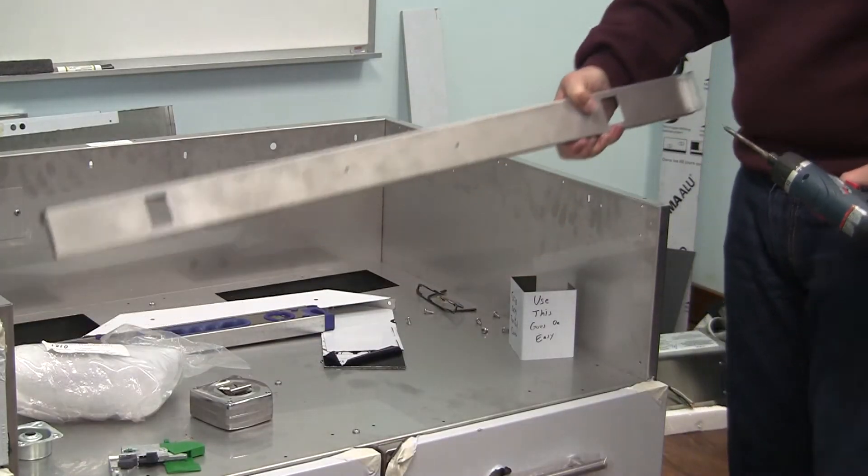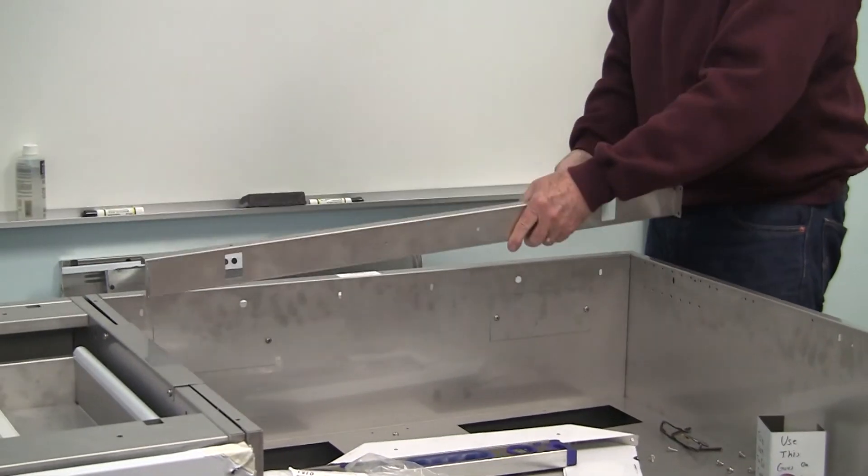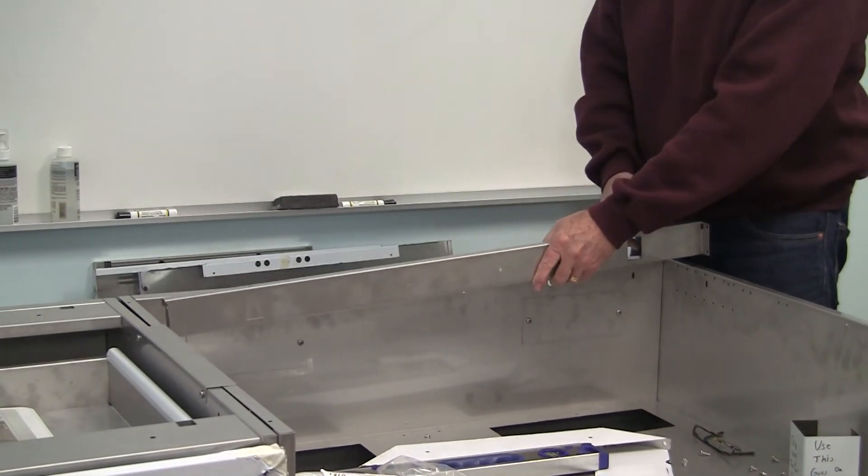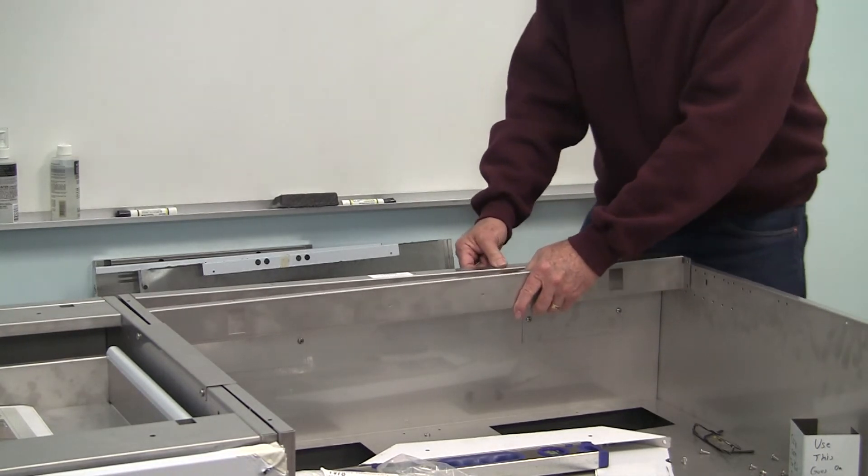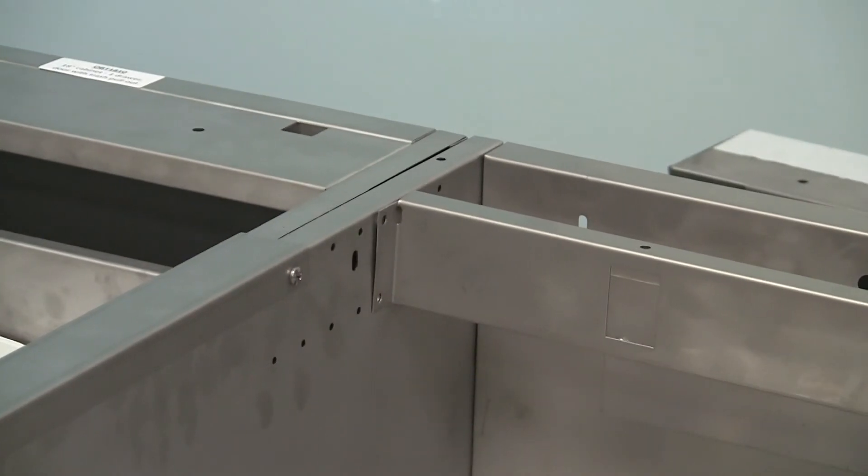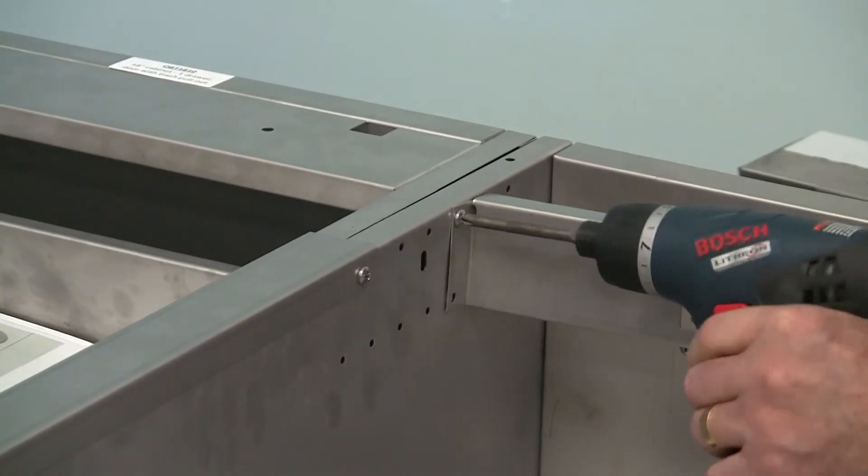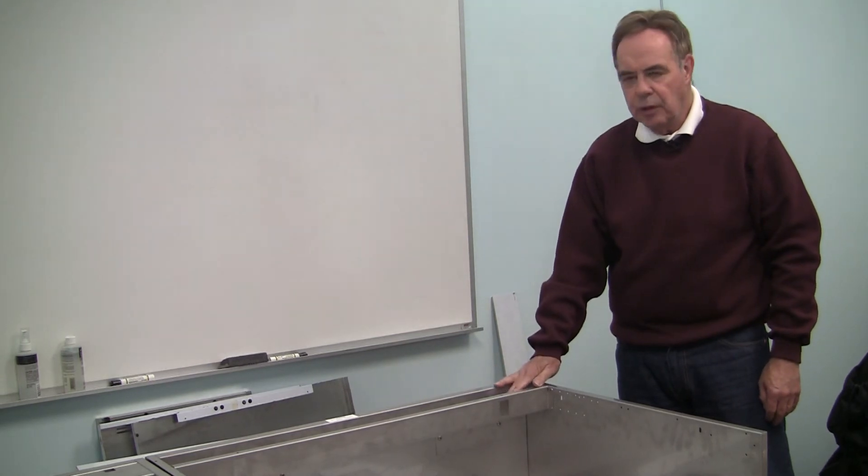Place it approximately two and a half to three inches from the back wall and then reinstall. This now becomes an integral part in supporting the counter top.